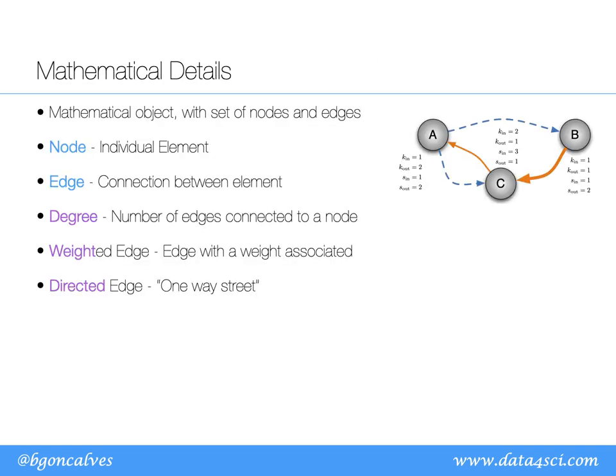To summarize: a graph is a mathematical object with nodes and edges. Nodes are individual elements, edges represent connections between them. The degree of a node is the number of edges connected to it. If edges are directed, you can speak of in-degree and out-degree — edges coming in versus going out. Edges can be weighted with a numerical value, and they can be directed or undirected.